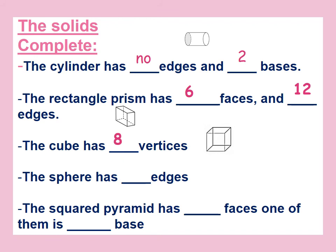And the sphere has how many edges? Here is a sphere — it has no edges, it's a ball. The squared pyramid has how many faces, and one of them is what base? Here is a squared pyramid — it has five faces. One of them is shaped like a square. Excellent.